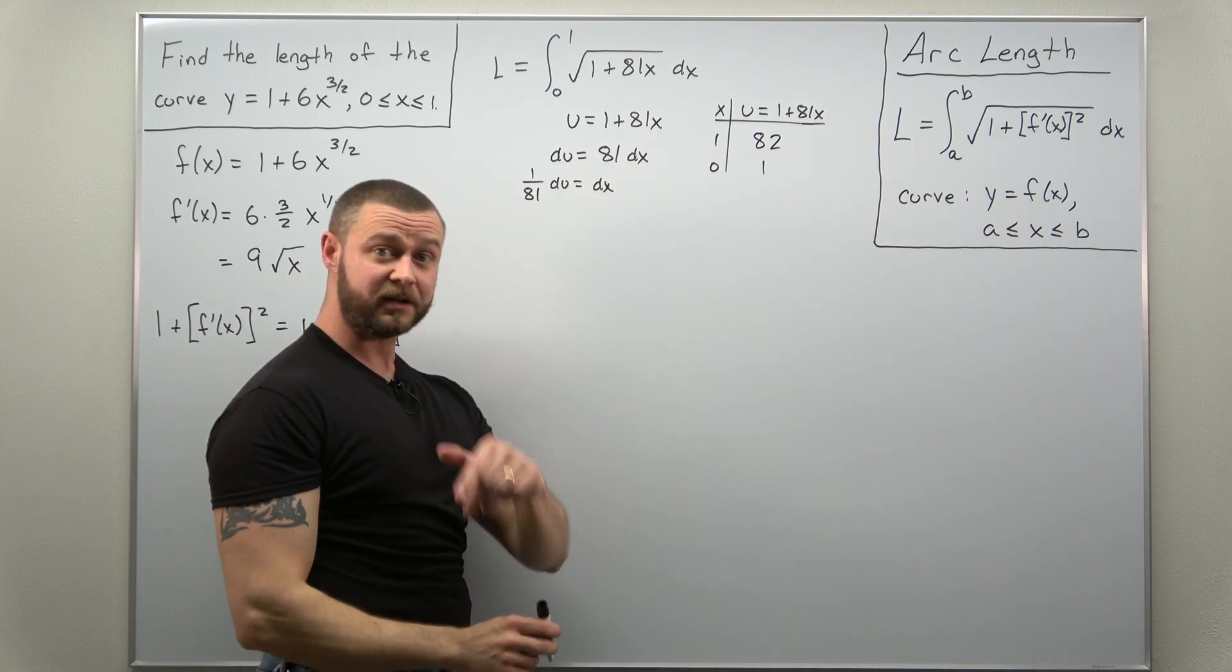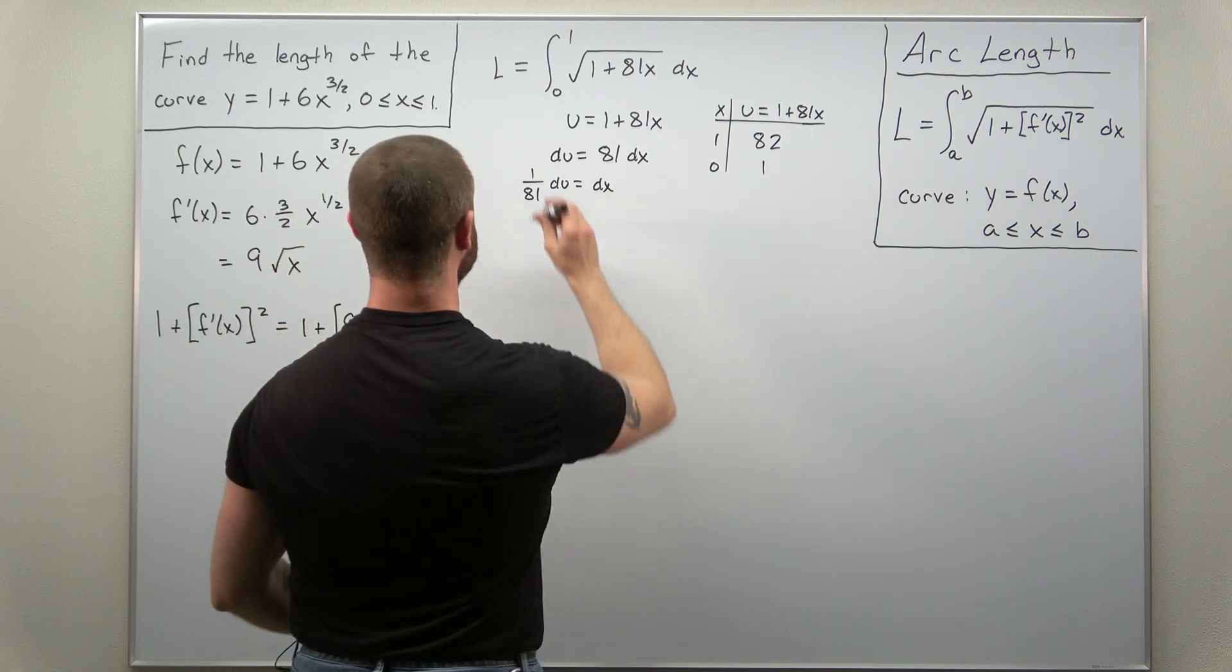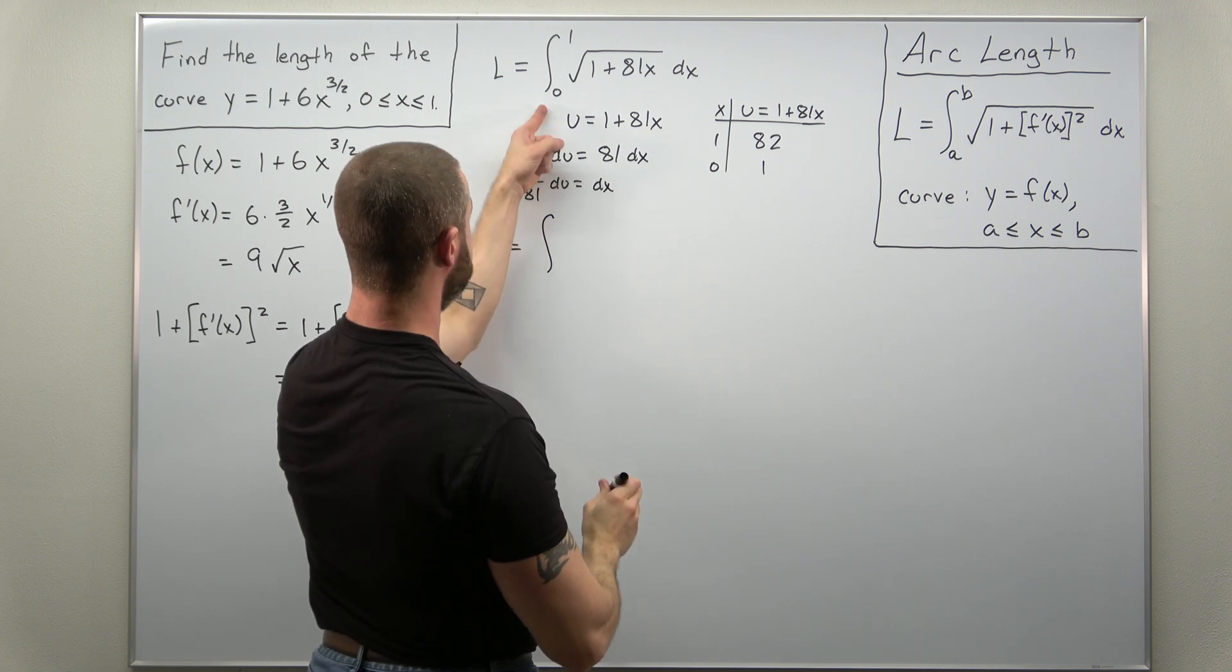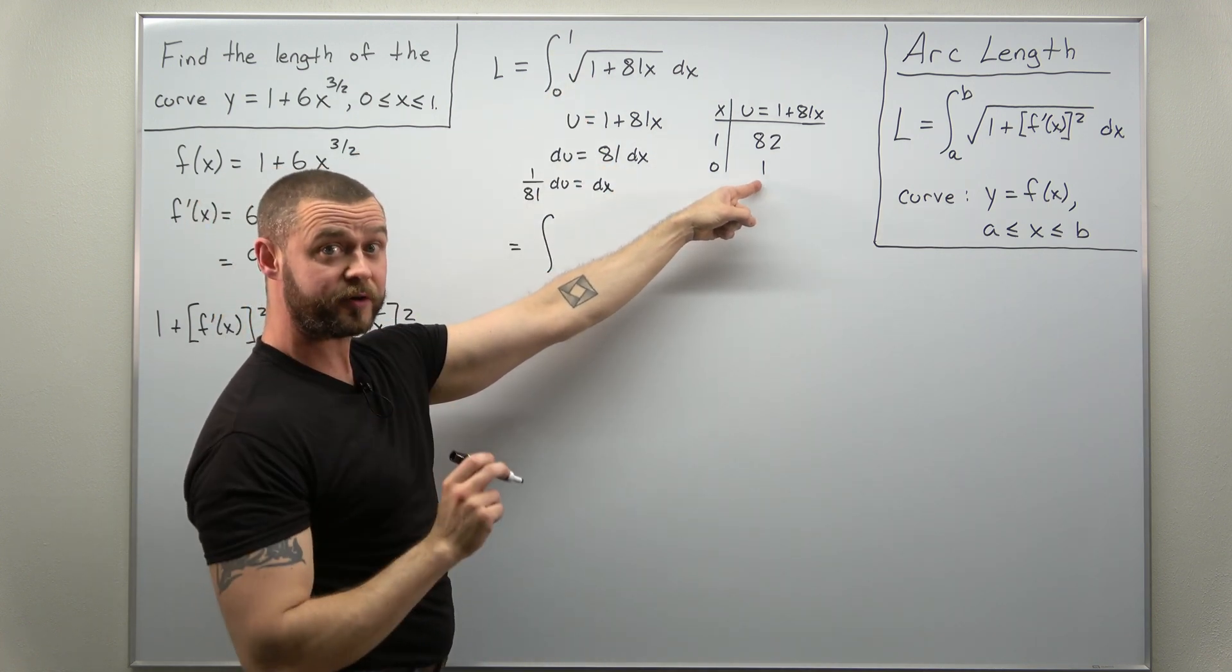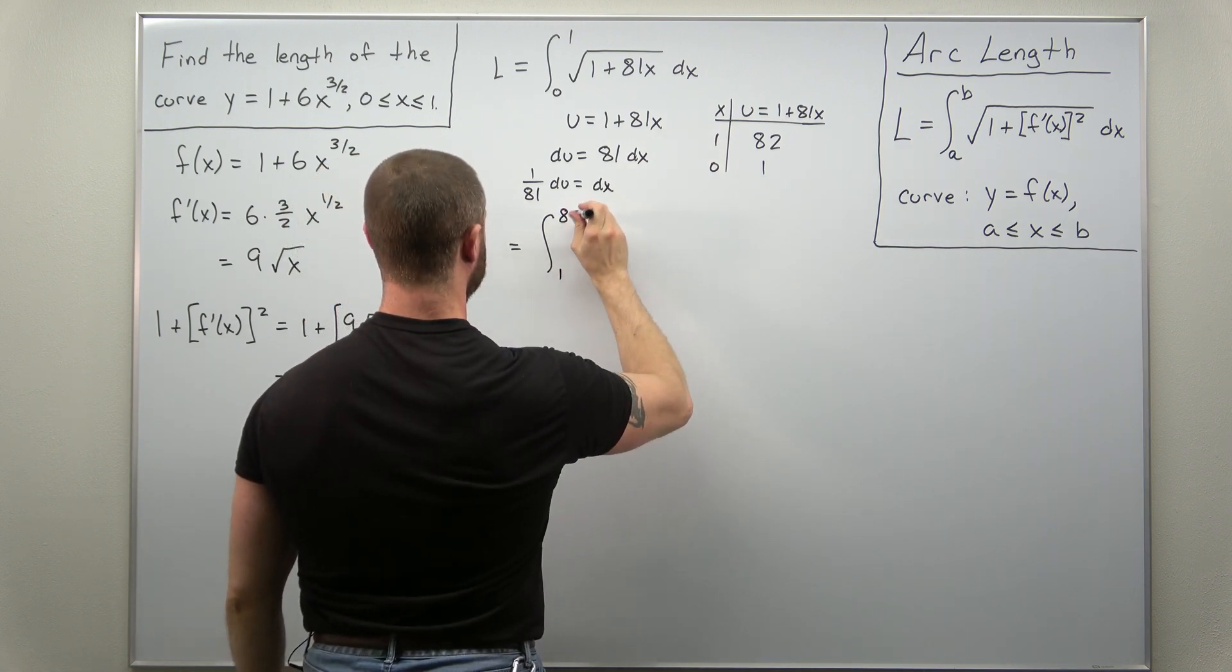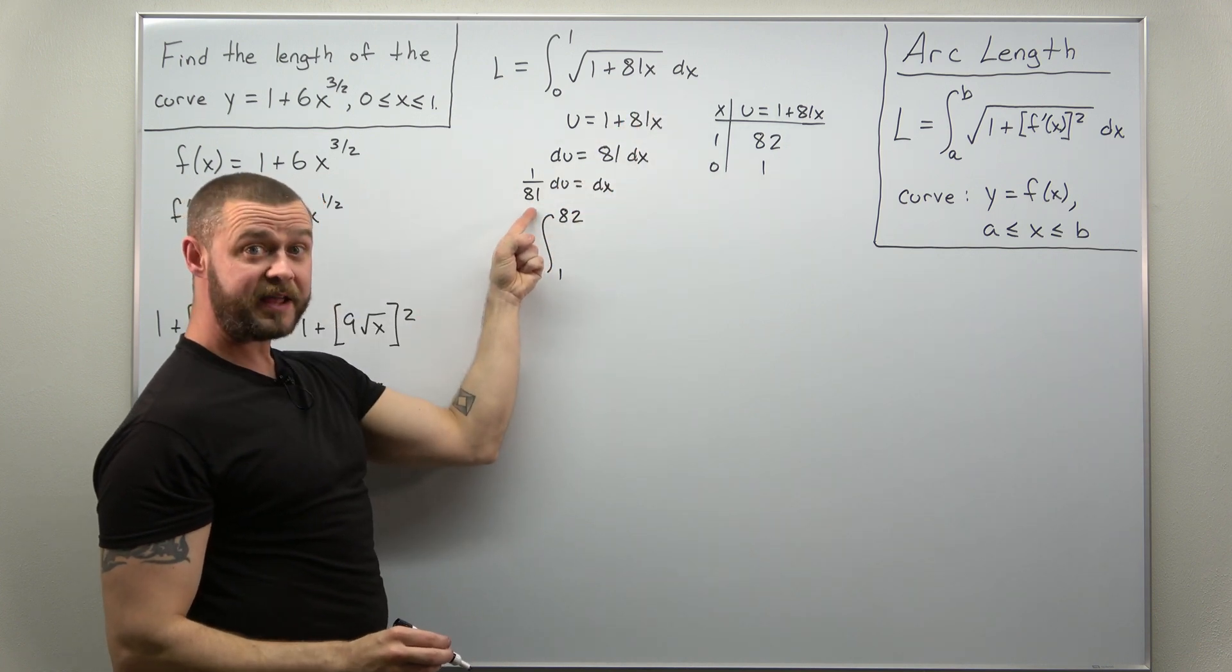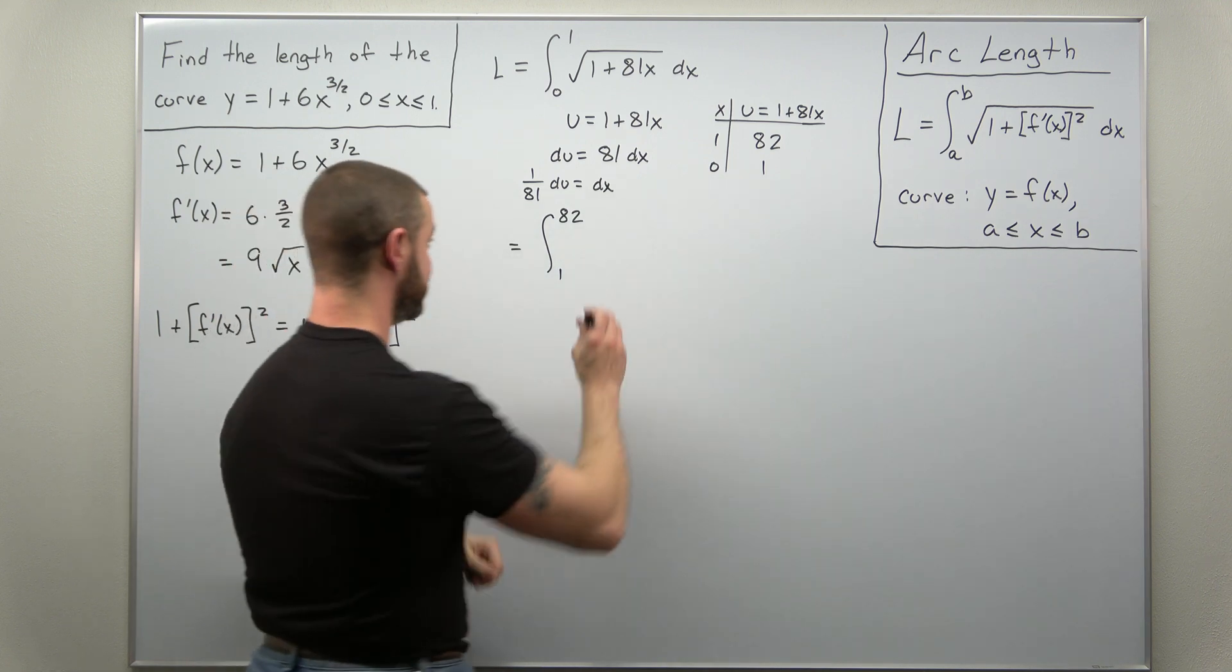We have everything we need to convert our integral in x to now an integral in terms of u. Our integral from x was from 0 to 1, but now our integral over u goes from 1 to 82. dx, we're converting that to 1 over 81 du. I'll put that factor of 1 over 81 in the front here.